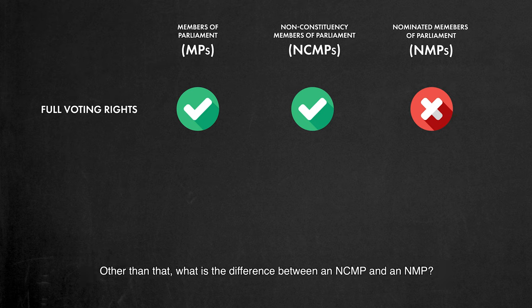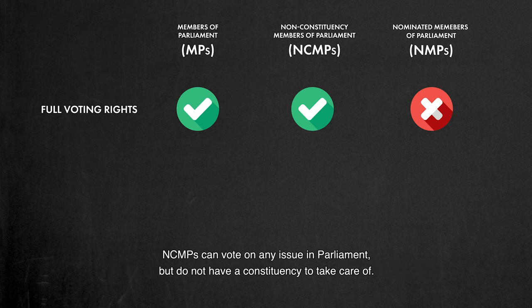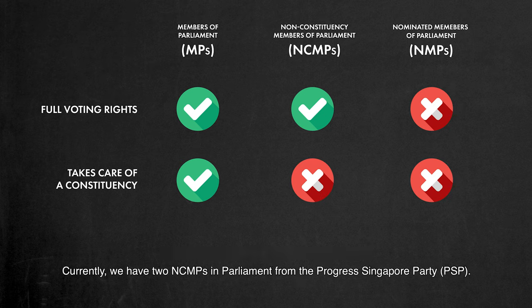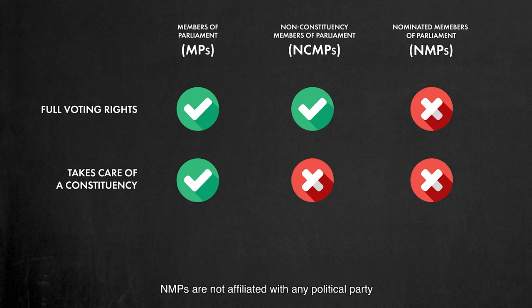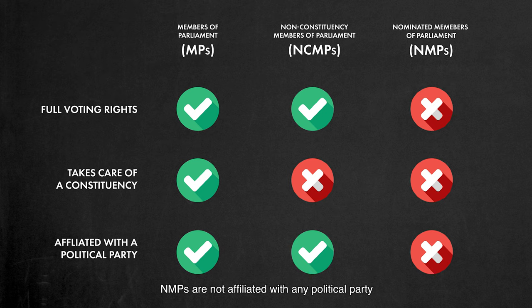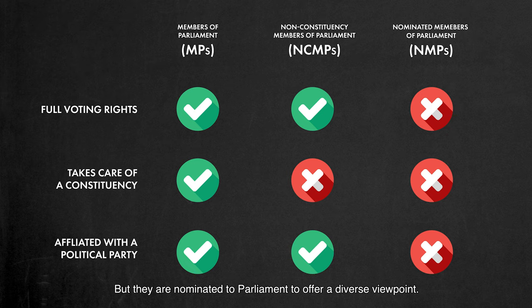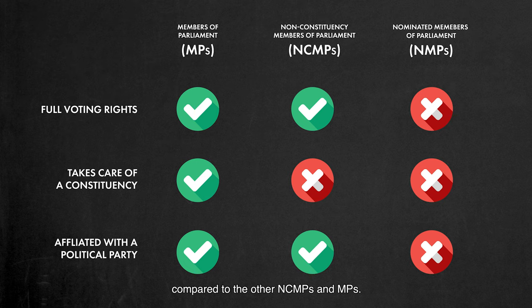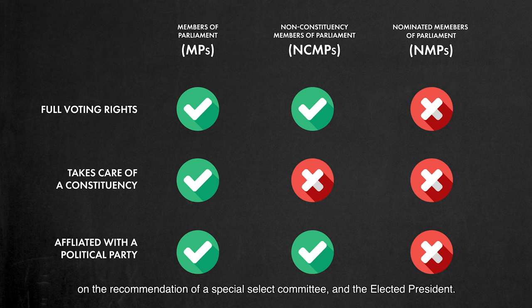Other than that, what is the difference between an NCMP and an NMP? NCMPs can vote on any issue in parliament but do not have a constituency to take care of. Currently, we have two NCMPs in parliament from the Progress Singapore Party. NMPs are not affiliated with any political party and wouldn't have to take part in the general elections, but are nominated to parliament to offer a diverse viewpoint. NMPs are appointed for a term of only two and a half years, on the recommendation of a special select committee and the elected president.